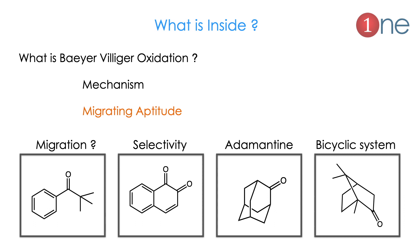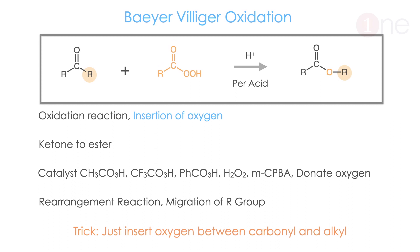Inside this video we will see: what is Baeyer-Villiger oxidation, then the mechanism behind the oxidation, then the migratory aptitude — this is very important; you should know which group will migrate. Then we will see the best examples — it can be on migration, selectivity, or rearrangement, sometimes in bicyclic systems. We will see them one by one.